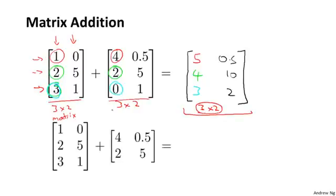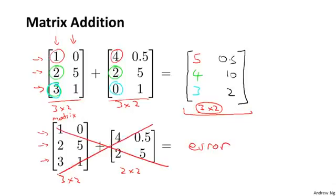Whereas in contrast, if you have to take these two matrices, so this one is a 3 by 2 matrix, so again, 3 rows, 2 columns. This here is a 2 by 2 matrix. And because these two matrices are not of the same dimension, this is an error. So you cannot add these two matrices and their sum is not well defined.